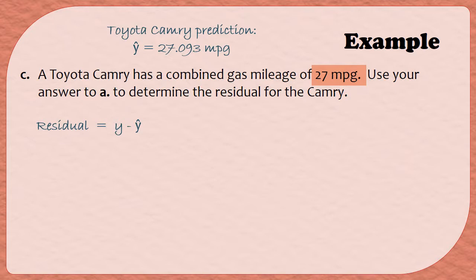The formula for the residual is to take the actual value and subtract our predicted value. In the description of this problem, we're told that the actual gas mileage is 27, so that is what we're going to substitute in for y. In the last video, we predicted that the gas mileage would be 27.093, so that is what we're going to substitute in for y hat. When we subtract these two values, we end up getting a negative 0.093.